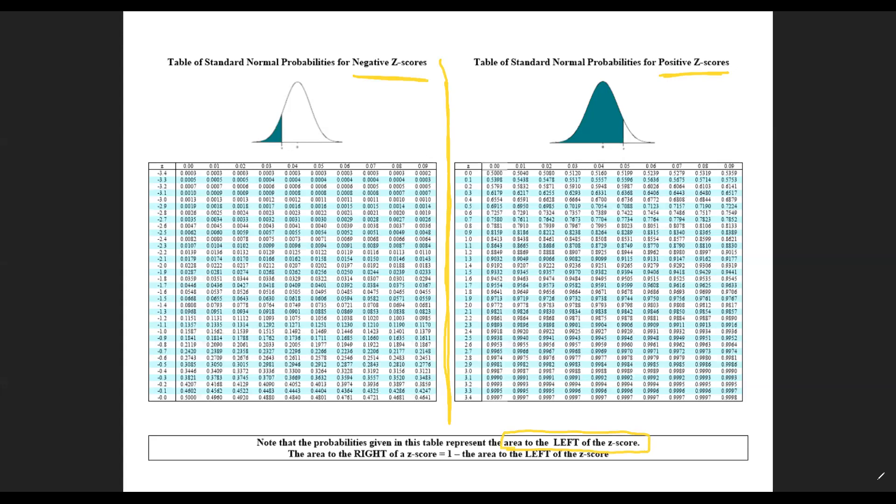So for example, if I wanted to find the probability that Z is less than 2.15, then what I will do is look on the right side because it's a positive Z score and look up 2.1. The first column is going to give you the first decimal, so for us that's 2.1, and then the second decimal place is in this row.